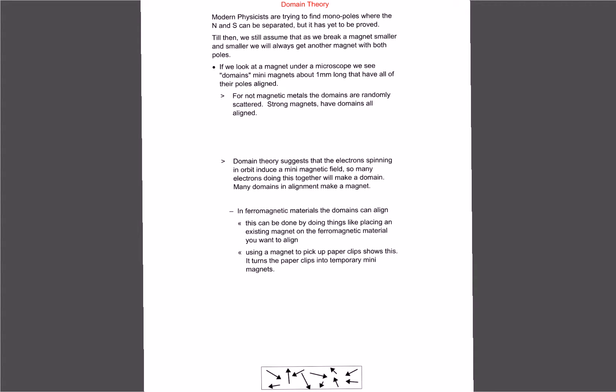Until then, we're going to stick with domain theory, which has been around for quite some time as it explains a lot of things about how magnets work and how things change with magnets. If they ever do invent the monopoles or find that to be true, then this whole domain theory may be wrong, but for the time being we're going to stick with it.